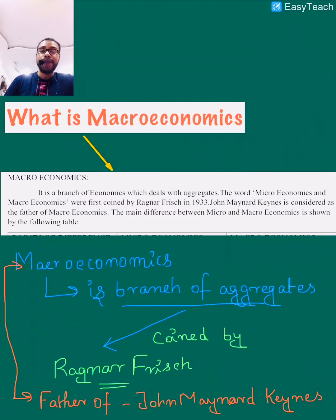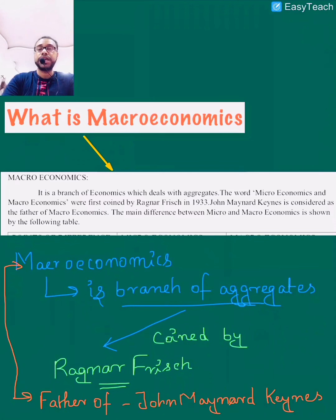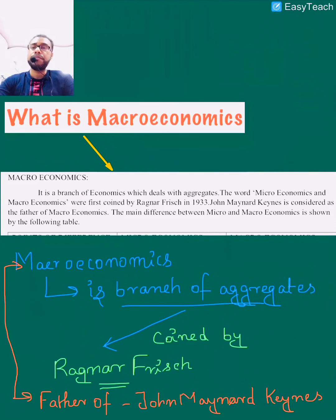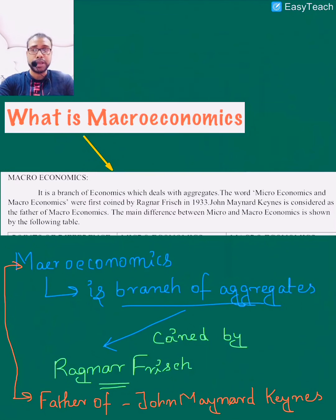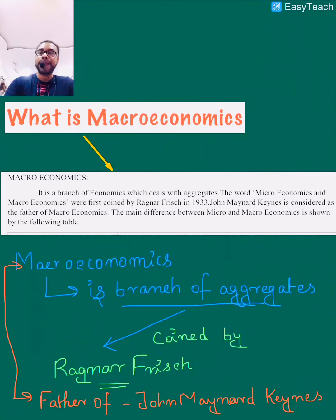That is why we call it aggregate — aggregate means collection of facts, and those facts pertain to a generalized audience or a generalized consumer. The word macroeconomics was coined by Ragner Frisch. Ragner Frisch was the main person behind coining the word, but the father of macroeconomics is John Maynard Keynes, because he gave the theory of macroeconomics, which we will understand in more detail shortly.